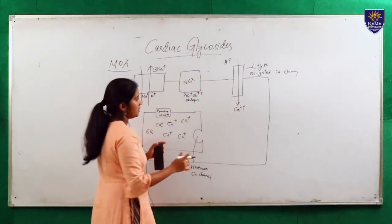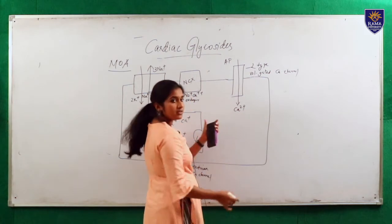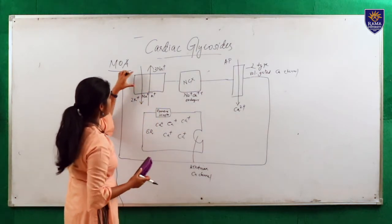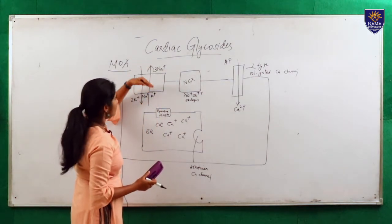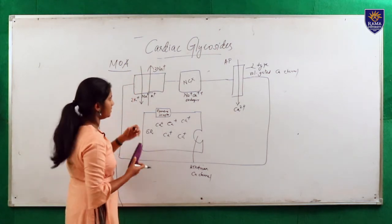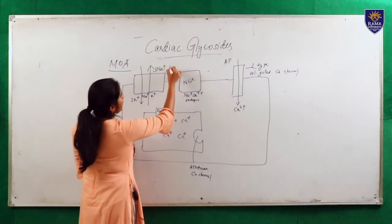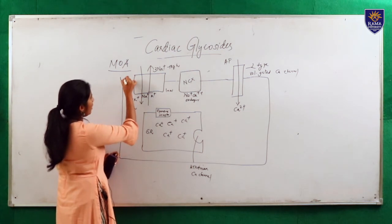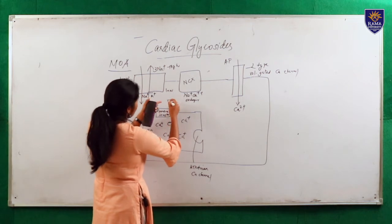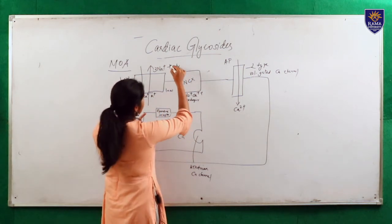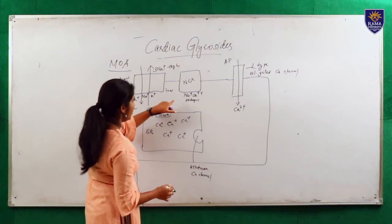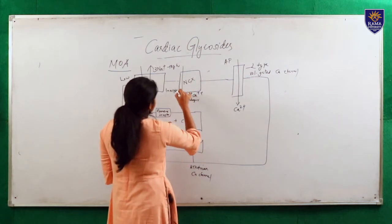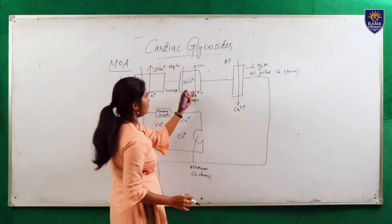I am explaining the normal physiology first. The sodium-potassium ATPase pump exchanges three sodium ions outside the cell and simultaneously two potassium ions inside, maintaining high sodium outside and low sodium inside, and high potassium inside and low outside. If sodium concentration gradient is low, exchange occurs through the sodium-calcium exchanger — sodium comes inside and calcium goes outside.